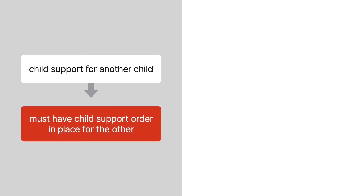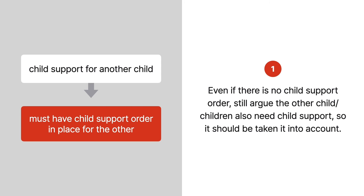The most common deduction is child support for another child, but you must have the child support order in place for that other child or children. Here comes Tip Number One: even if there is no child support order in place, you still want to argue to the court that the other child or children also need child support, so the court should take that into account. It may not always be a winner, but it can't hurt to try. Show the court that the person is paying child support, whether by order or otherwise, and that should be another deduction taken off. That's Tip Number One.